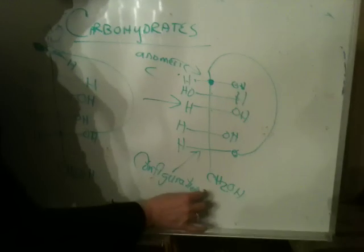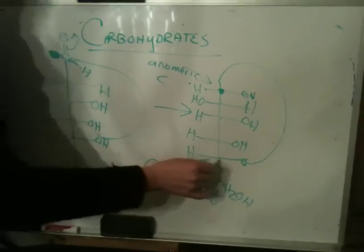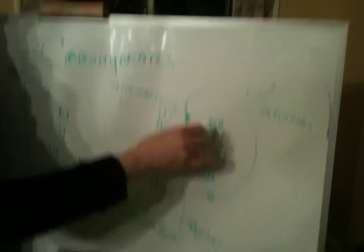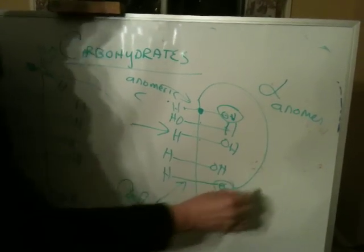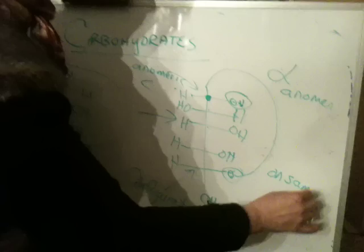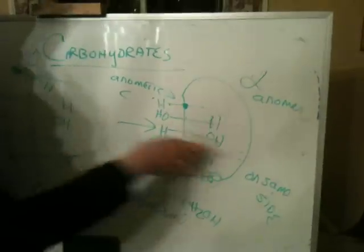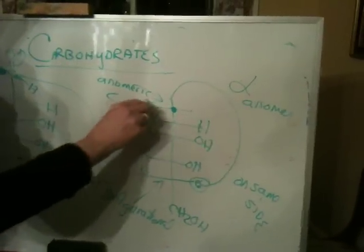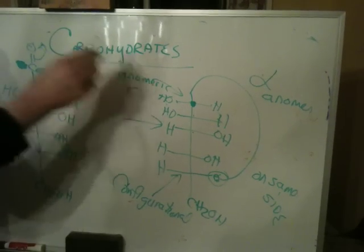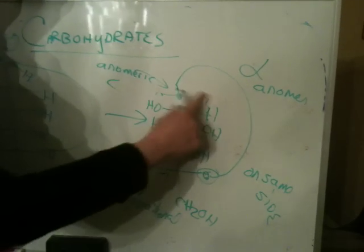This particular form — this is the configurational carbon. This is the alpha anomer, and the alpha anomer is the anomer that has this OH and this oxygen on the same side. The beta anomer would have the OH at the anomeric carbon on the other side, with the H on the opposite side. That would be the beta anomer, but I'm going back to the alpha because that's what I have written up here.